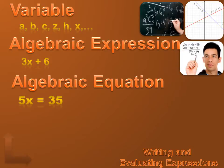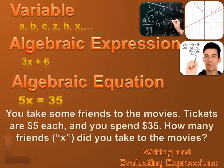Now, five times X equals 35. That seems vague. I mean, what does that really mean? Well, let's show you an example. What if the situation were this? You have some friends. You take some friends to the movies. Tickets are $5 each. And you spend $35. How many friends, which we'll call X, did you take to the movies?